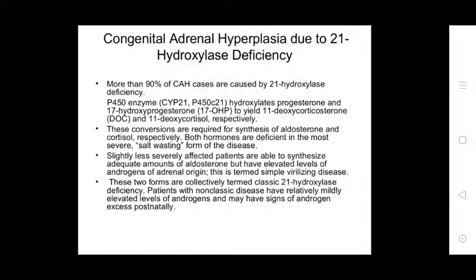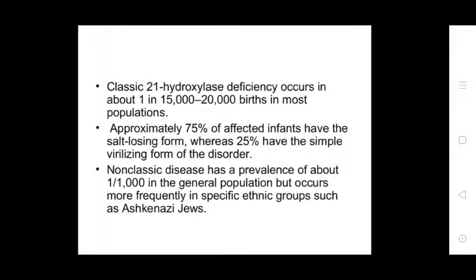The classic form is classified as 21-hydroxylase deficiency. Patients with non-classical disease have relatively mildly elevated levels of androgen and may show signs of androgen excess postnatally. CAH due to 21-hydroxylase deficiency occurs in about 1 in 15,000 to 20,000 of the general population. Approximately 75% of affected infants have the salt-wasting form, and 25% have simple virilizing disease. Non-classical disease prevalence is about 1 in 1,000 in the general population but occurs more frequently in specific ethnic groups such as Ashkenazi Jews.